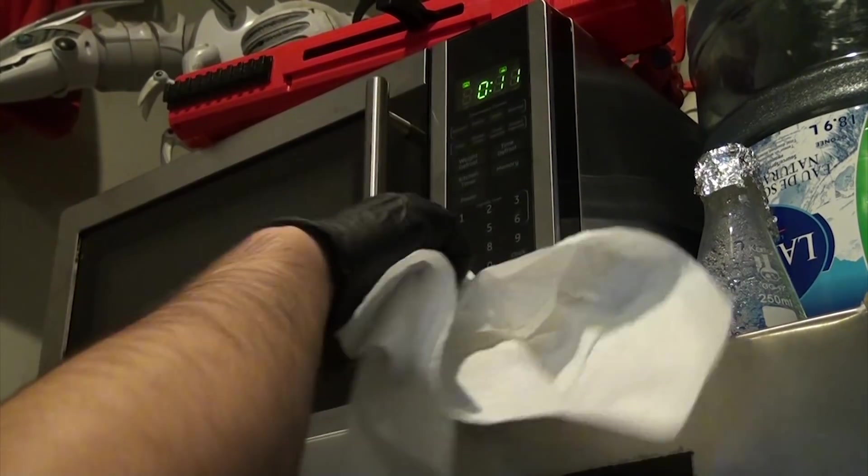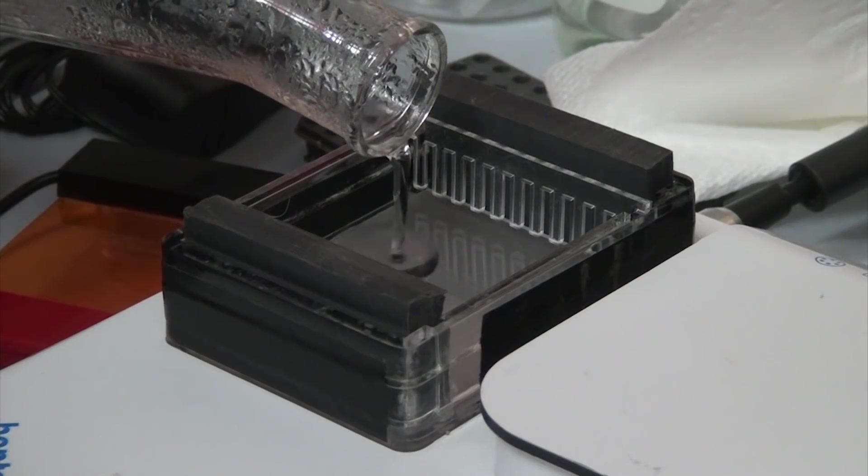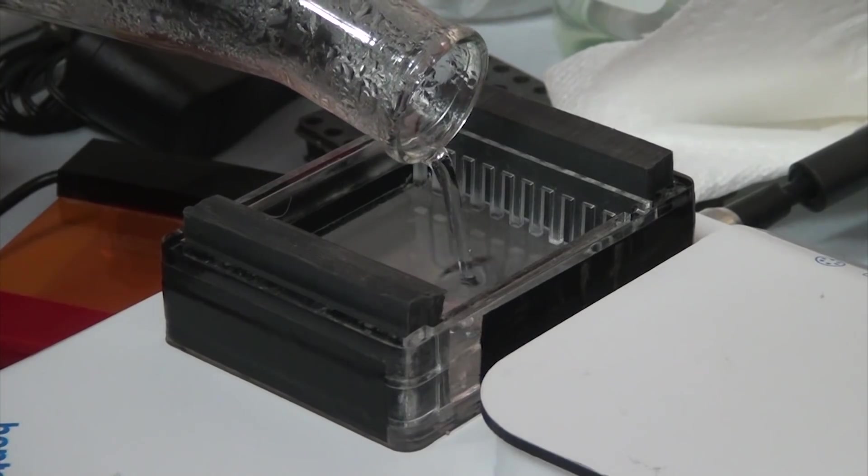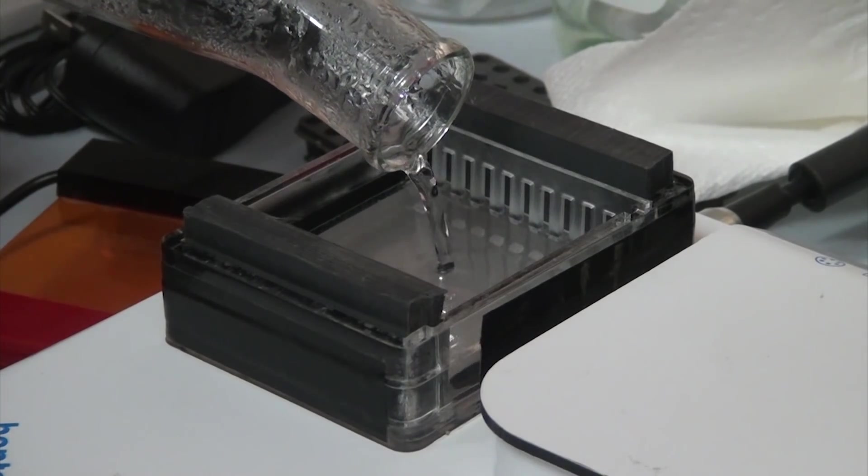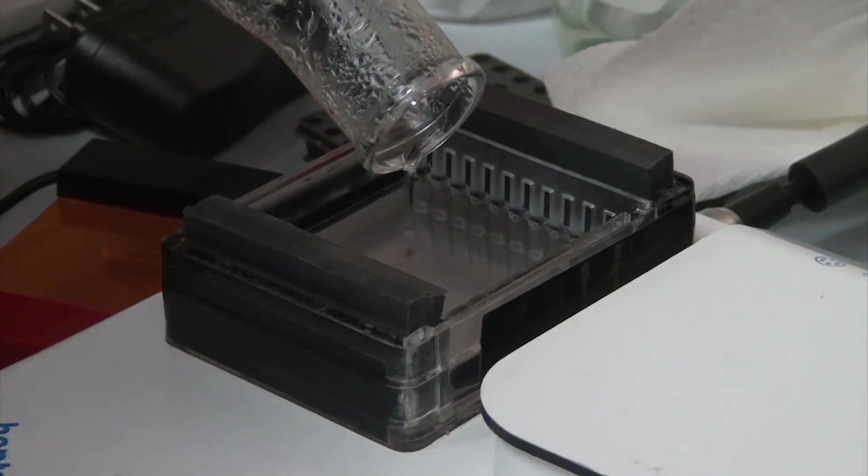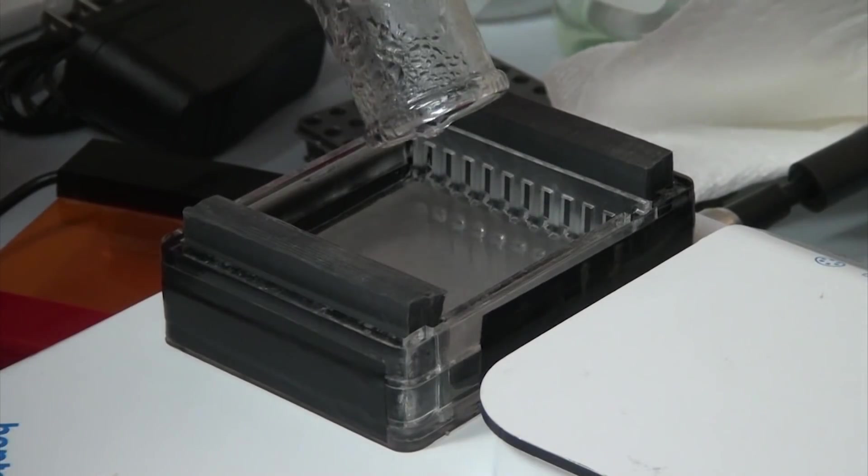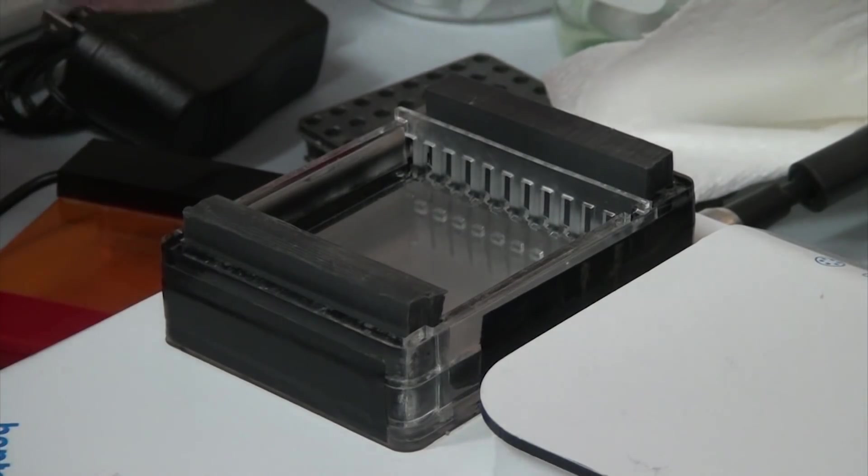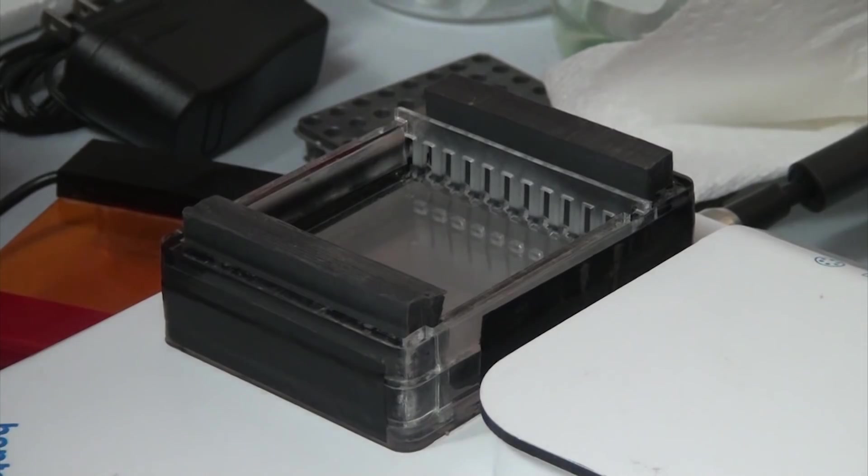Moving right along, with the gel solution made, microwave it to melt everything and then cast your gel. Also, don't forget to place your combs near one end of the gel. Not all the way at the edge though, leave a bit of a gap so that you get holes and not notches. The gel doesn't need to be particularly thick, just enough that the wells are 3-5mm deep.